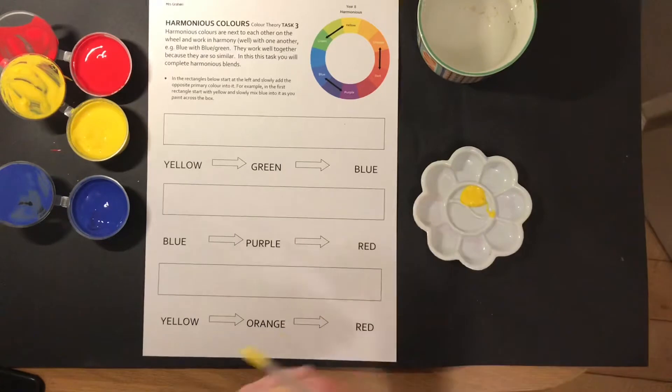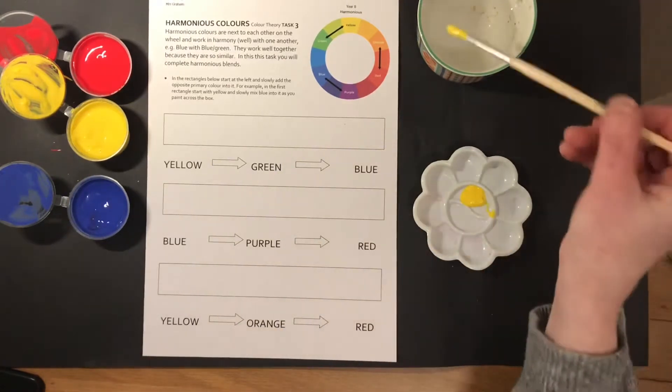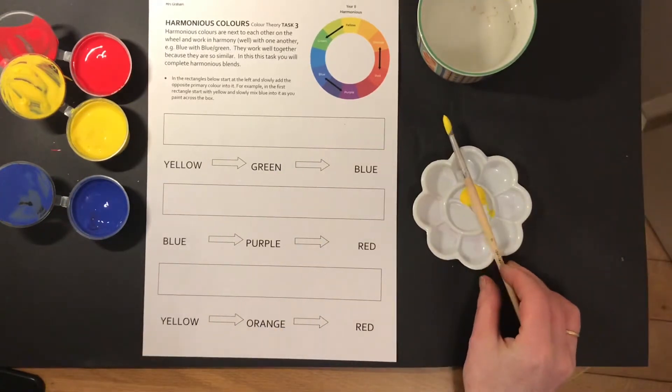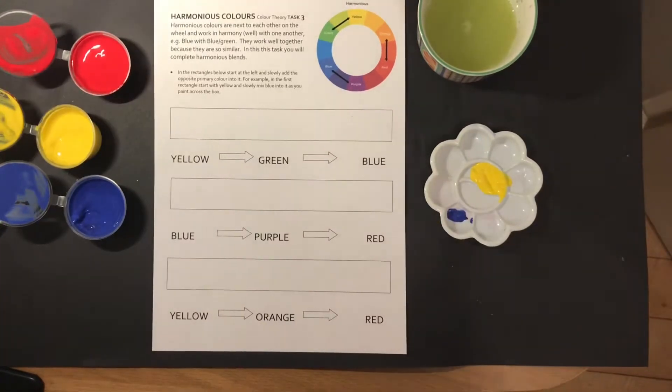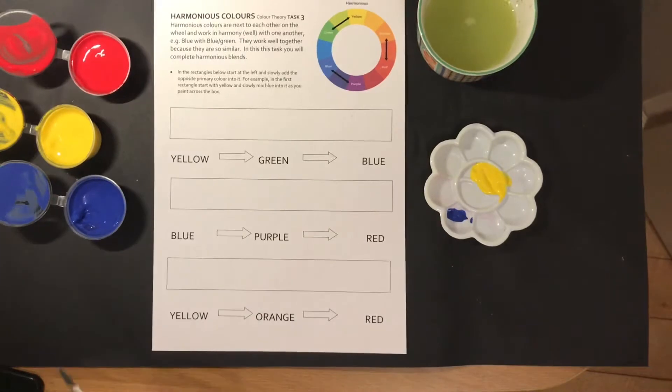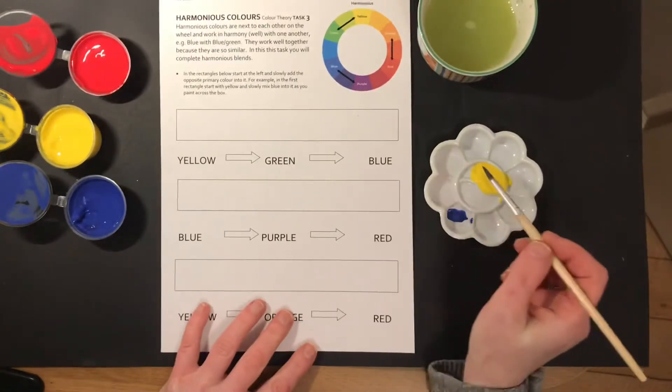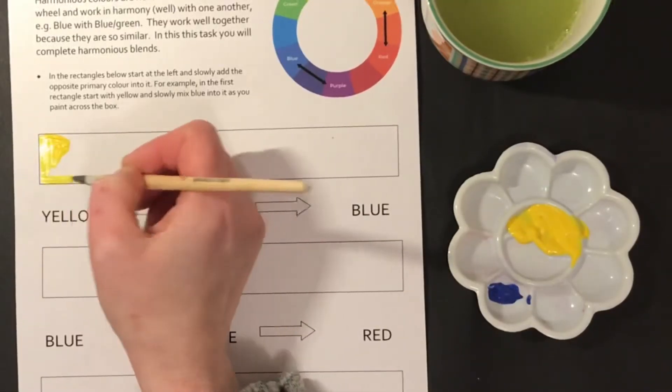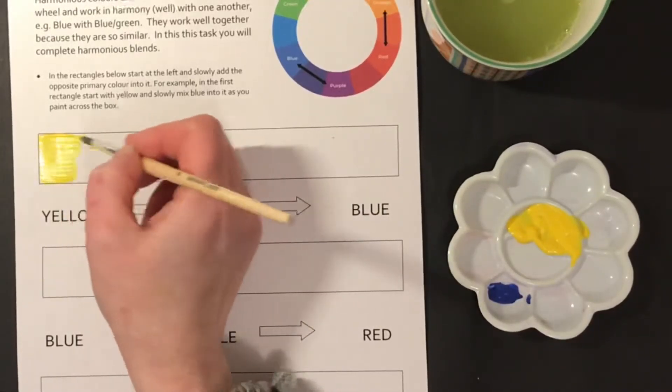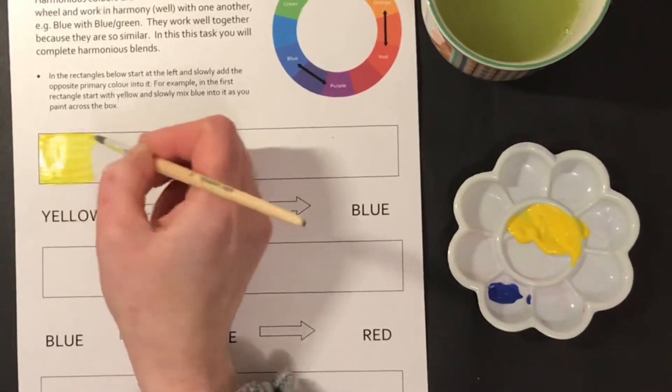I've put some yellow out on my palette and then just a small amount of blue because the blue is obviously more intense than the yellow. First thing you want to do is just add yellow only, a couple of centimeters of yellow, before you start to do any mixing.